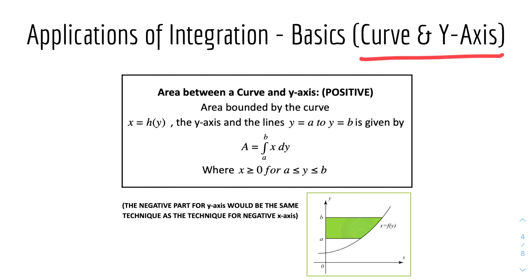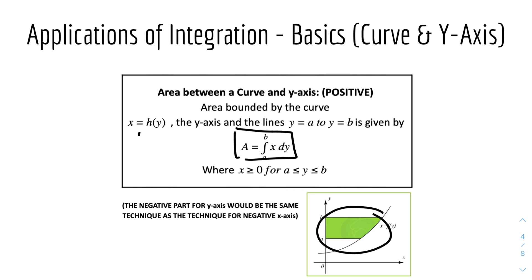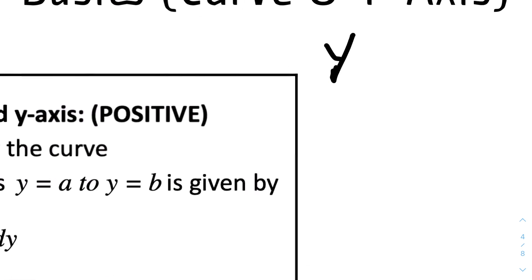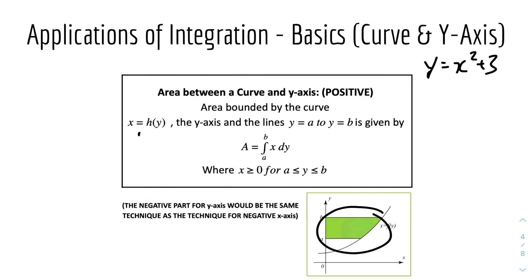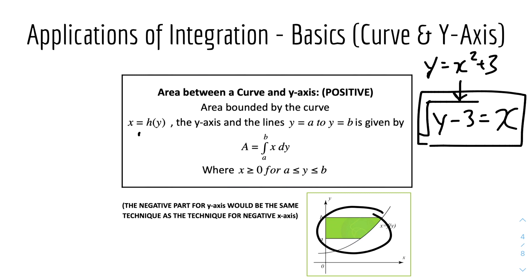Then we have the curve and the y-axis — it's basically the same. The area between a curve and the y-axis where it is positive is given by this equation, when the curve is x equals h of y. The difference from before is: when finding the area between the curve and the x-axis, you express the equation in terms of y — for example, y equals x squared plus 3. But for the area between the curve and the y-axis, you have to express the equation in terms of x. For example, rearranging gives root of (y minus 3) equals x, and then you can integrate to find the area.